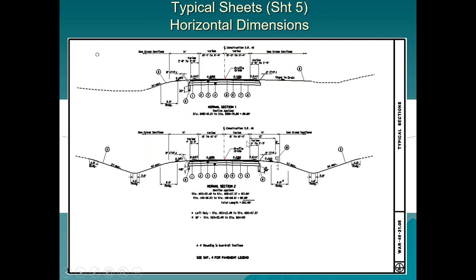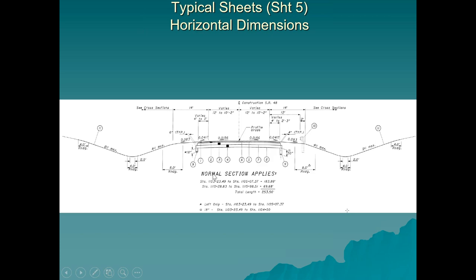The first thing you must do when reading plans — and I'll repeat this throughout the presentation — is identify where the center line is, because the entire project is built off the center line. In ODOT plans we try to have only one center line, called the Center Line of Construction. The center line of construction is for the contractor to build the project; the center line of right-of-way is how we acquire property. You must identify the center line first — it's critical.